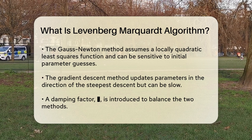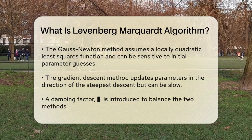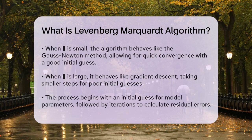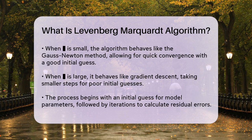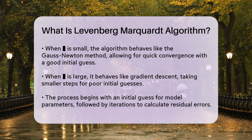The Levenberg-Marquardt algorithm bridges these two methods by introducing a damping factor, lambda. When lambda is small, the algorithm behaves more like the Gauss-Newton method, which can converge quickly if the initial guess is good. When lambda is large, it behaves more like the gradient descent method, taking smaller steps in the direction opposite to the gradient, which helps when the initial guess is far off.